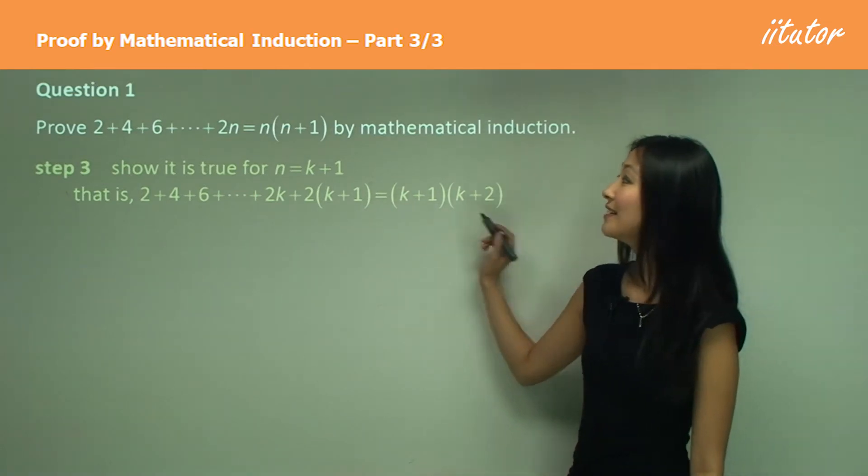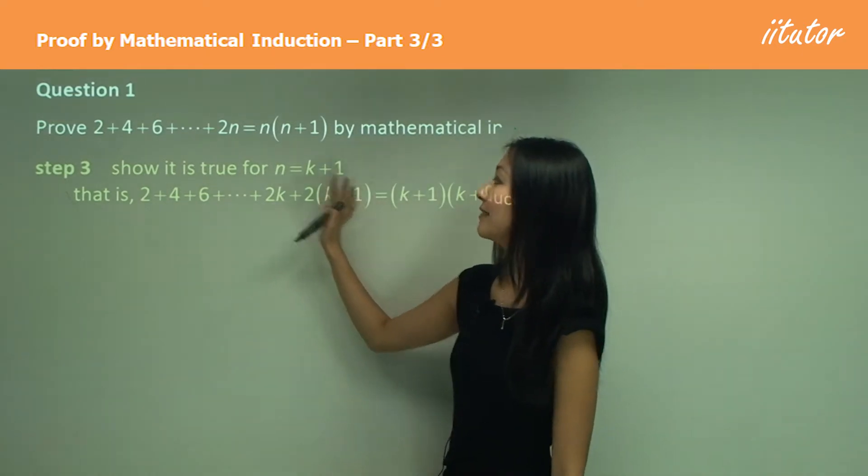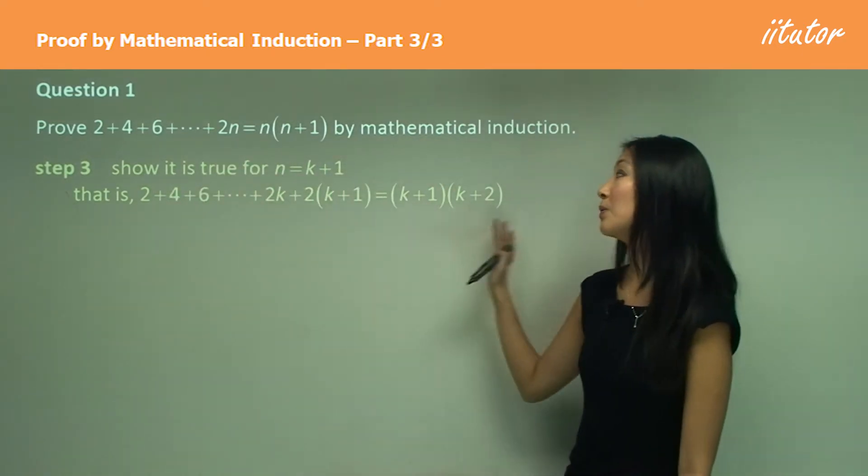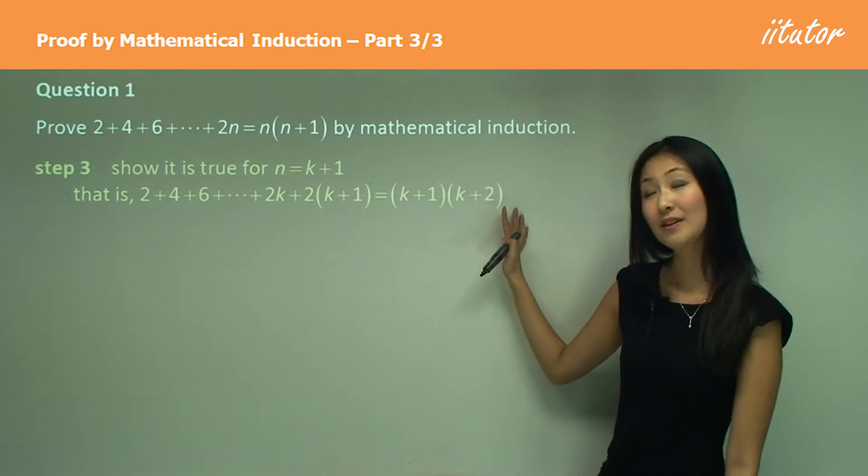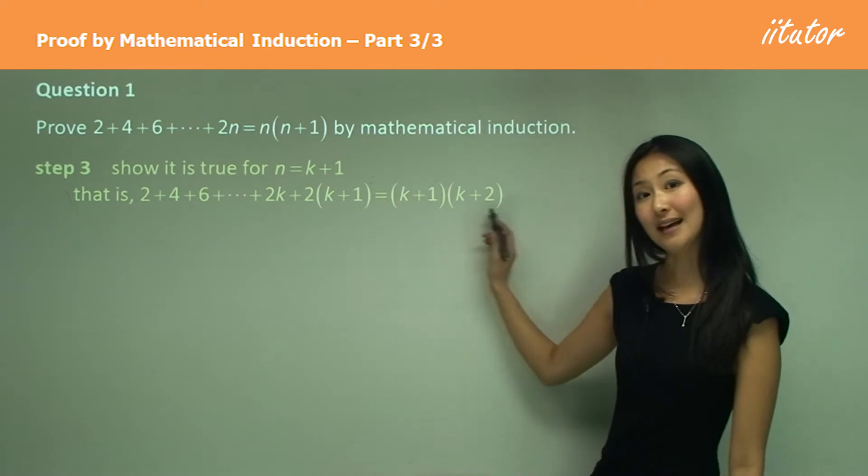Okay, so to show it's true for n equals k plus 1, we want to prove that this side equals to the right hand side. So we need to write that is and then write this out.